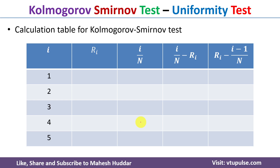This is the calculation table for the Kolmogorov-Smirnov test. The value of i will go from 1 to 5 because we have been given 5 random numbers. Ri is nothing but the given random numbers arranged in ascending order.